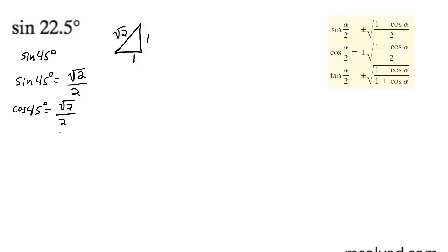Now we're going to use the half angle formula. The sine of 22.5 degrees is going to be equal to plus, because we're in quadrant 1, the square root of 1 minus root 2 over 2, divided by 2.